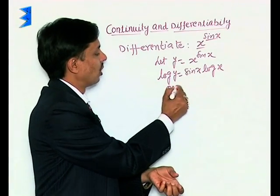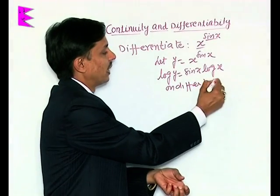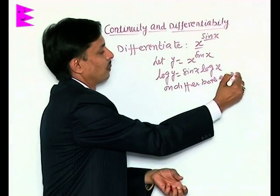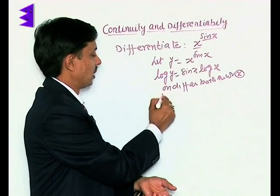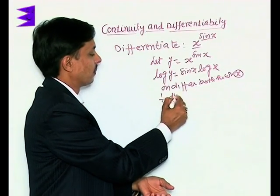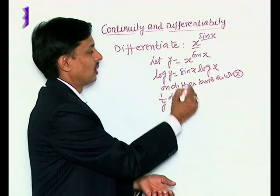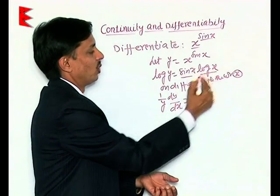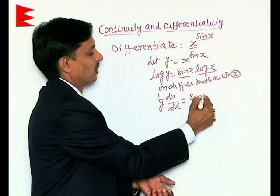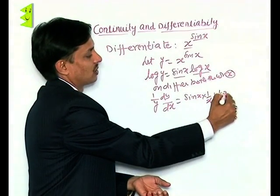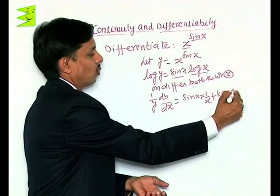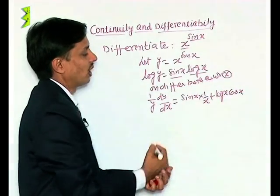And now on differentiating both sides with respect to x, log y will be 1 upon y dy by dx, equals first into derivative of second, that is sin x into 1 upon x, plus second log x into derivative of sin x, which is cos x.